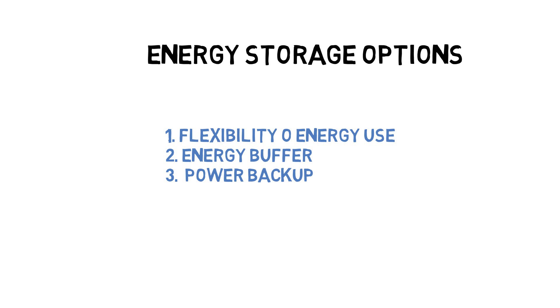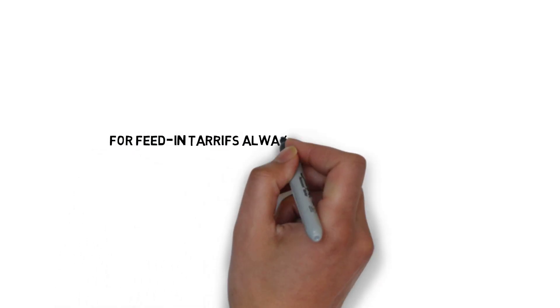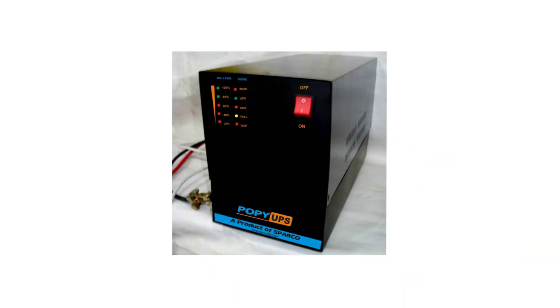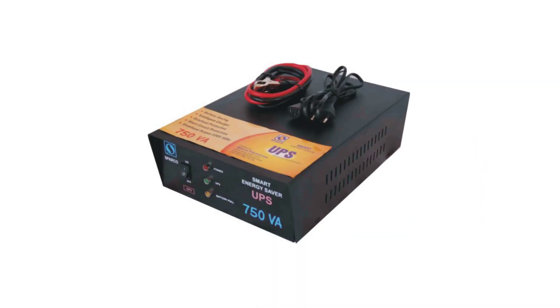It should be noted that if a PV installation is being done to make use of feed-in tariffs, it must be checked beforehand with the utilities or electricity supplier whether they allow systems with battery storage. In many countries, low-cost UPS systems made by the local cottage industry are available. These UPS systems can be integrated directly with solar PV systems to provide storage options, and they also include an inverter and a charge controller in addition to the battery.